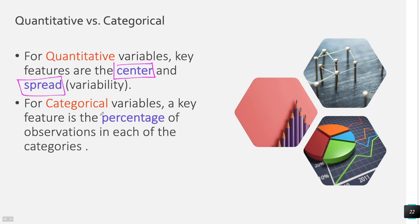What we can do for categorical variables is count the number of things in a certain category, or find the proportion or percentage. Proportion and percentage are great for categorical data, whereas mean, median, and mode — measures of center and measures of spread — are really better for quantitative data.